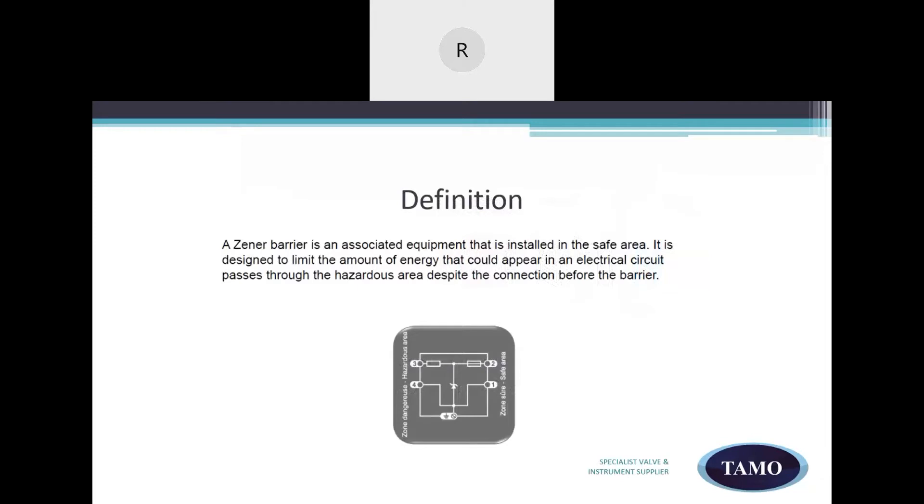Let's look at the definition of a Zeno barrier. It's an associated device or equipment that is installed in the safe area. It is designed to limit the amount of energy that could appear in an electrical circuit passing through the hazardous area. As with any intrinsic safety equipment, the Zeno barrier allows cables to short circuit to each other or to metallic parts connected to ground without any danger.